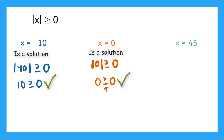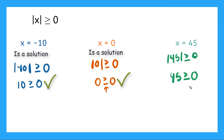How about this last one? Does 45 make our inequality true? Let's test it out. The absolute value of 45 is greater than or equal to zero. If I evaluate this, I know it's just positive 45. Is this inequality true? Yeah, so 45 is a solution.